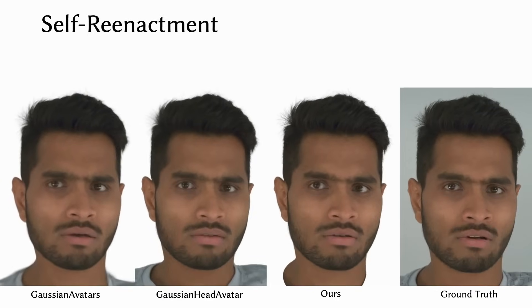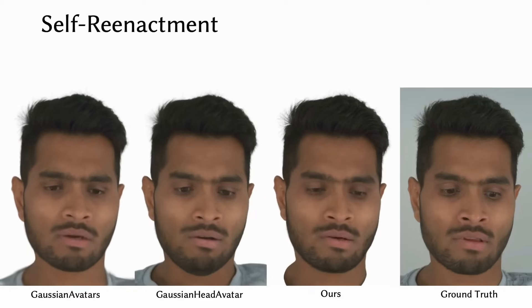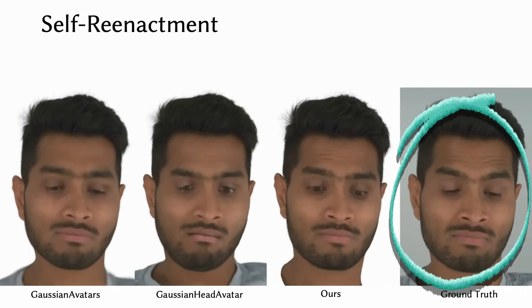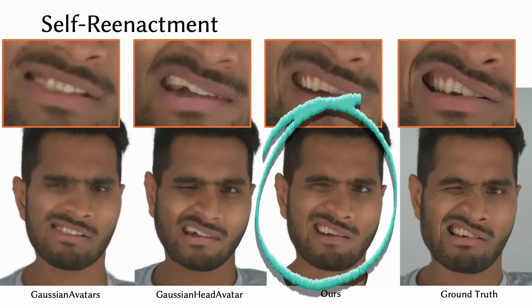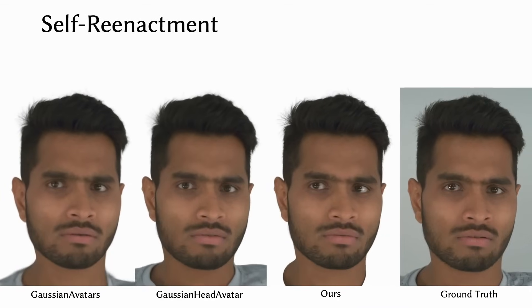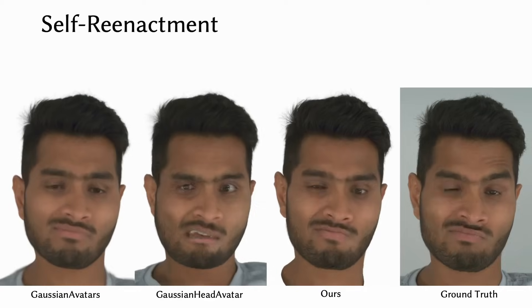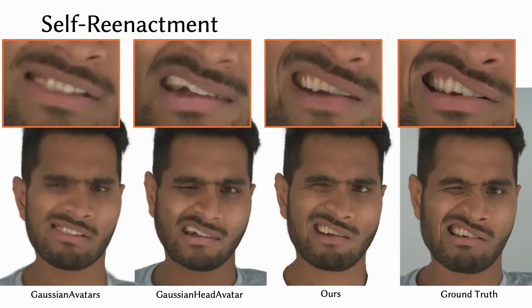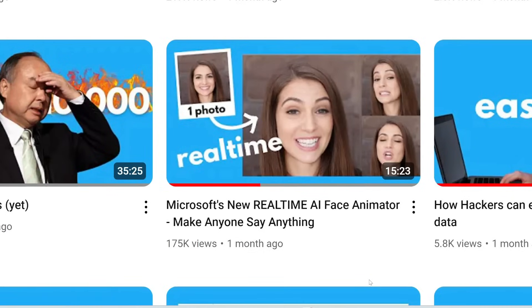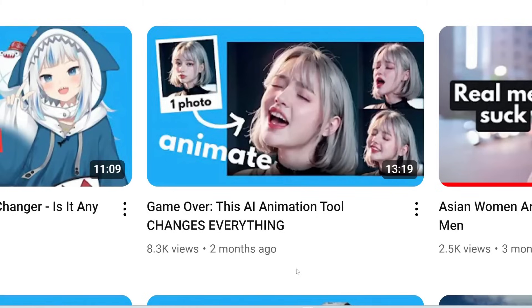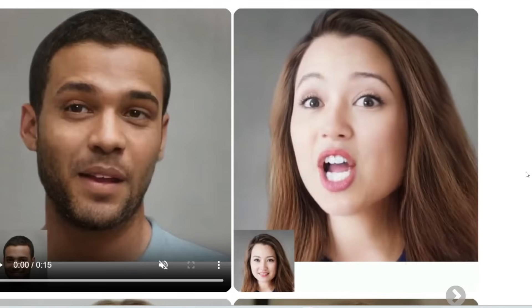Here are some examples comparing their method with previous methods. The video on the far right is the real video — this is the ground truth. To the left of that is their new method, and the two further left are older methods, which are less accurate and less realistic. You can see it even handles teeth very accurately. If you've watched my previous video on Microsoft's Vasa One or Alibaba's Emote Portrait Live, the biggest noticeable flaw is the teeth. Here's an example from Microsoft's Vasa One where the teeth keep changing shape — it's not temporally consistent.